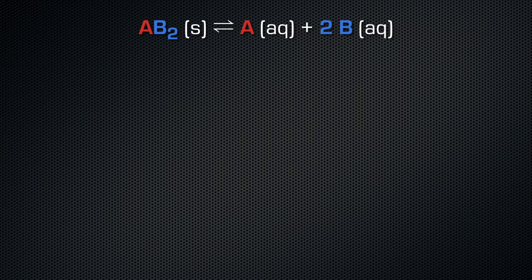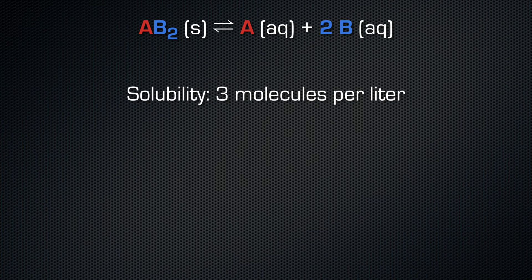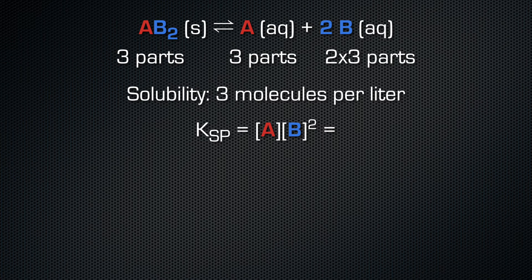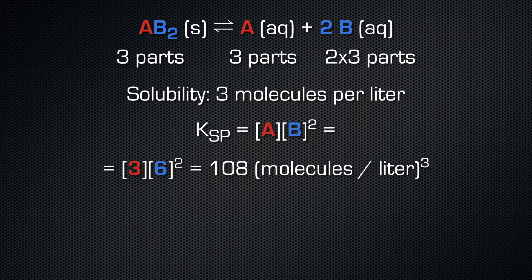Maybe you still haven't understood the purpose of the solubility product. Let's have a look at this virtual example. We do not calculate with moles here, but with single molecules — that's basically the same thing, just with a much smaller amount of particles. The salt AB₂ has a very low solubility of 3 molecules per liter. The equilibrium constant of this dissolution process is the solubility product. If 3 particles dissolve per liter, we get 3 particles A and 6 particles B in solution. Particle B has a stoichiometric factor of 2, therefore the solubility product is equal to [A][B]².